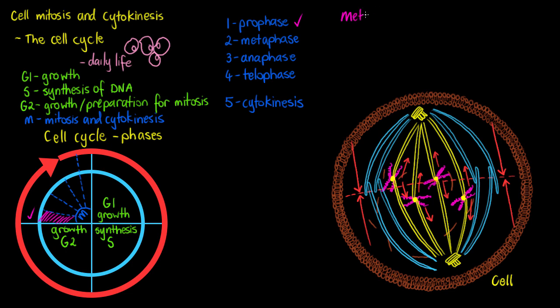Welcome to the second part of our mitosis tutorial where we are going to be talking about the second and third phases of mitosis called metaphase and anaphase. If you've watched the first part, you'd know that up until this point our chromosomes have condensed and our mitotic spindle began to form and push our two centrosomes toward opposite poles of the cell, with our polar microtubules pushing the poles apart and our kinetochore microtubules attaching to the chromosomes, slowly engaging in an ongoing tug of war that resulted in our chromosomes approaching the midline of the cell.